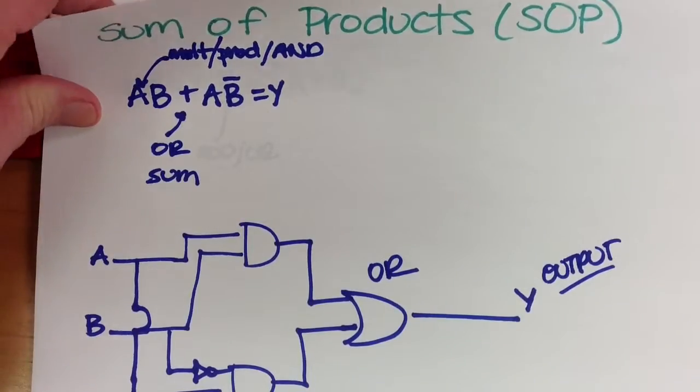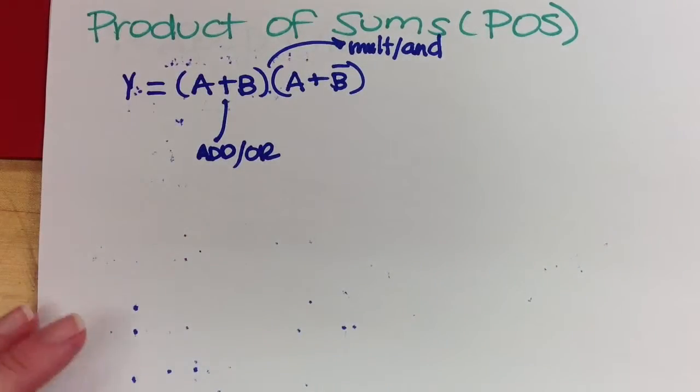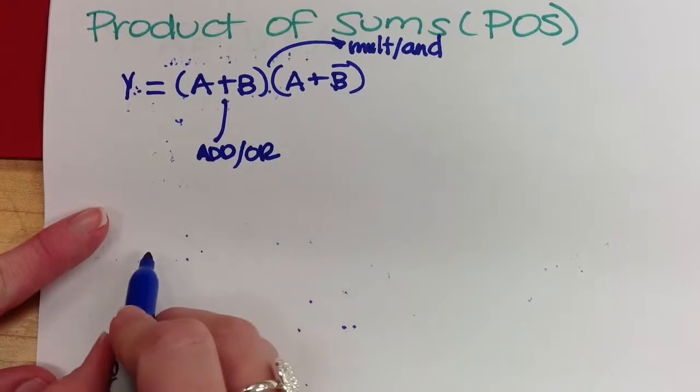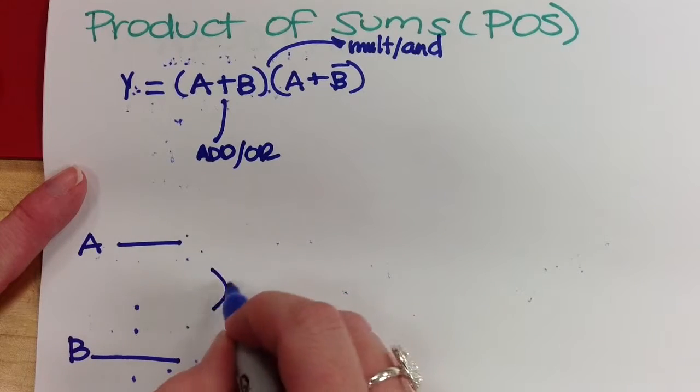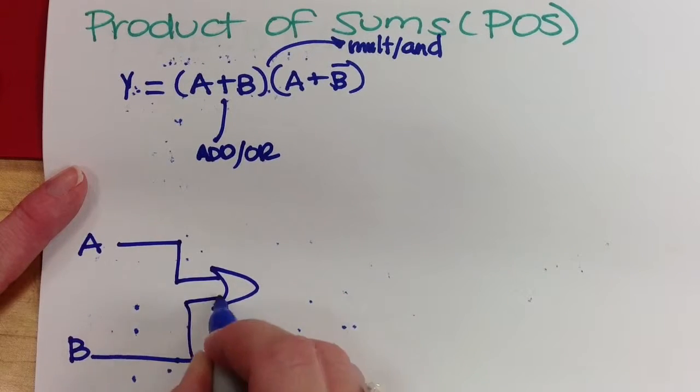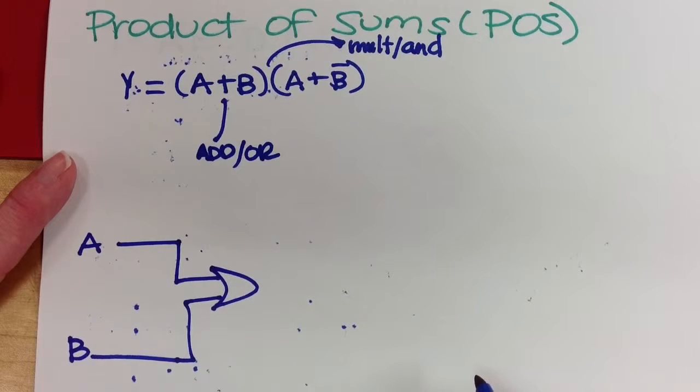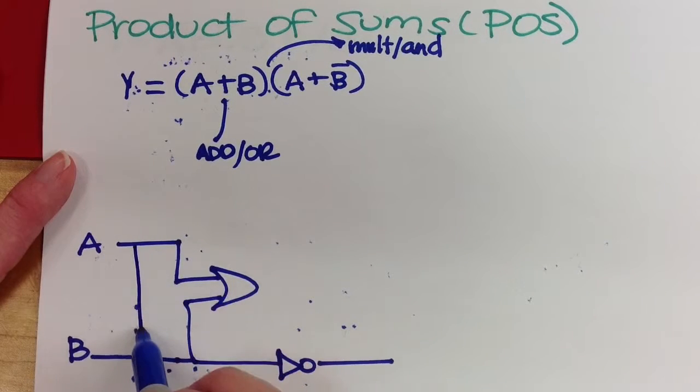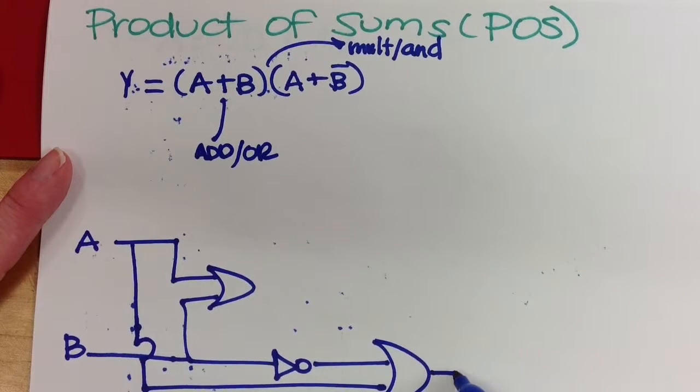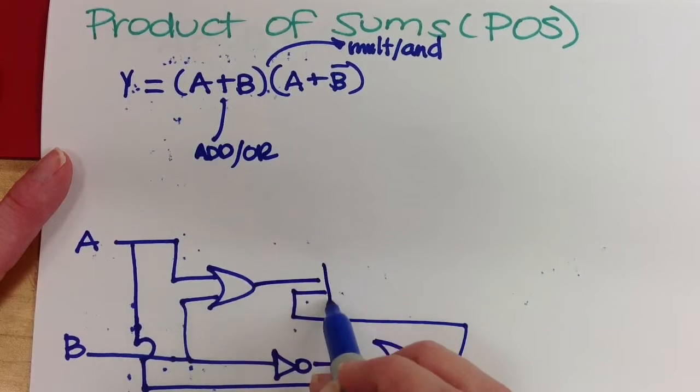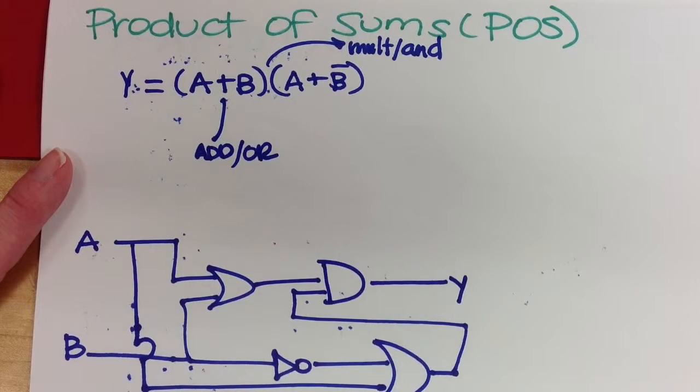So when we think of product of sums then, when you come out, you're going to have A and B. And you're going to bring those into an OR gate first. Then you're going to take, let's make our other OR gate. We're going to make not B. That's also going to go into an OR gate. And then those things are going to come together into an AND gate to make our output.